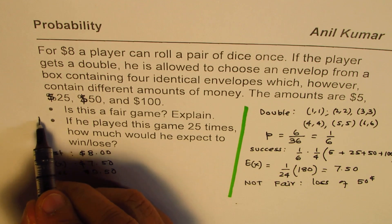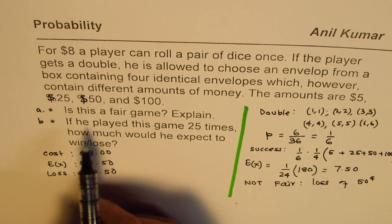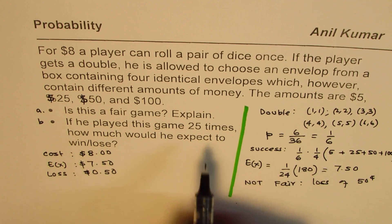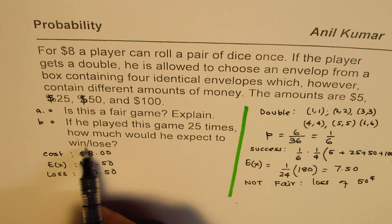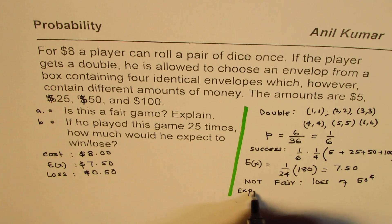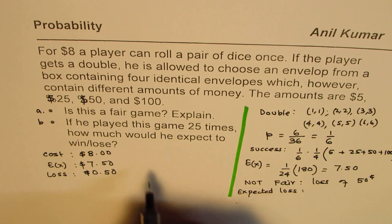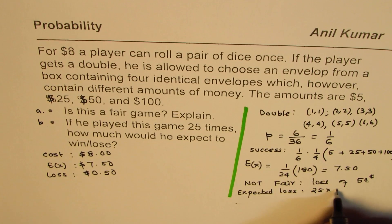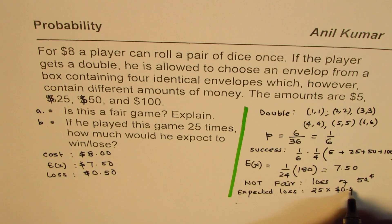Part B is if a player, if he played this game 25 times, how much would he expect to lose? So the part B answer is expected loss.